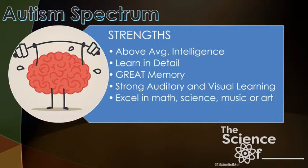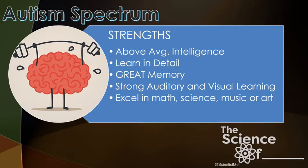Now let's talk about the awesome things people on the spectrum have. About 46% of individuals on the spectrum, according to the CDC, have above average intelligence. They learn in detail, pay attention to specifics, and have exceptional memory. They have strong auditory and visual learning. They tend to excel in math, science, music, and art — largely because of their attention to detail and strong memory. They have phenomenal strengths.